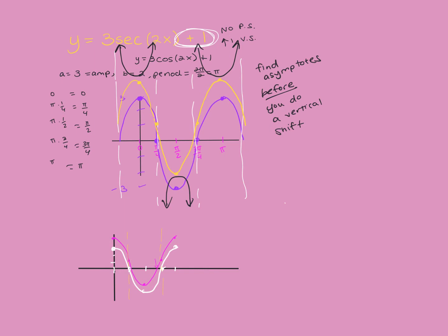Your test covers from the beginning of the radian material: 6-1 and 6-3 from the quiz content, then 6-4 which is sine and cosine, and just the secant and cosecant part of 6-5. Tangent and cotangent will not be on this test.